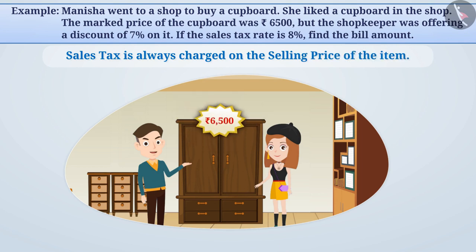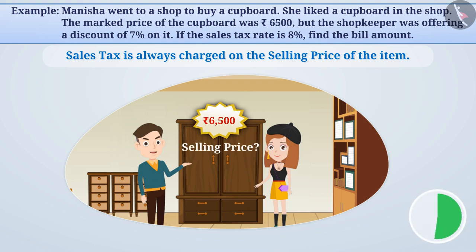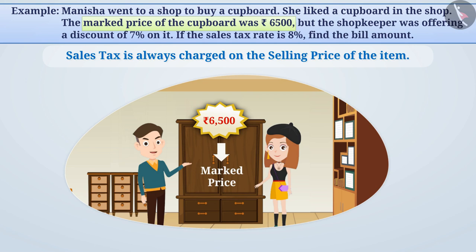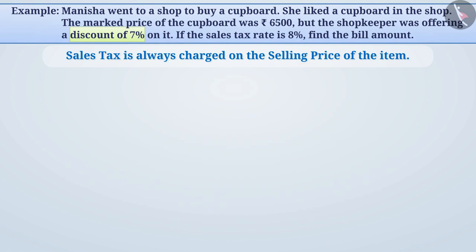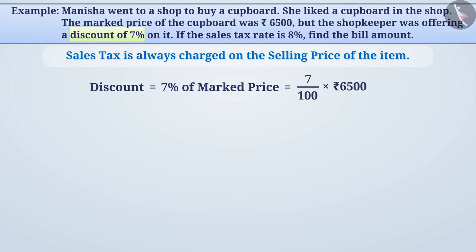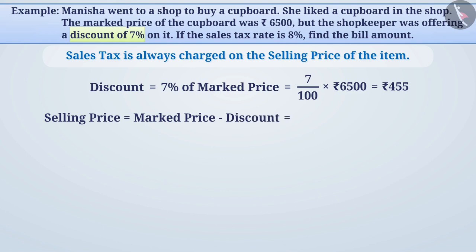Note that 6,500 rupees is the marked price, not the selling price. To get the selling price, we have to deduct the discount from the marked price. Since the discount is given in percentage, let's find the discount amount first. Discount equals 7% of marked price, which is 7 divided by 100 multiplied by 6,500 rupees, equal to 455 rupees. Therefore, the selling price equals marked price minus discount, which is 6,500 rupees minus 455 rupees, equal to 6,045 rupees.